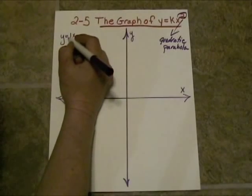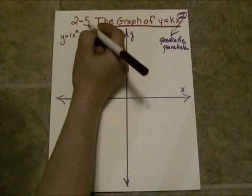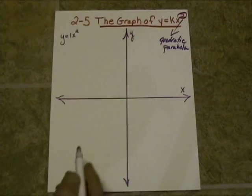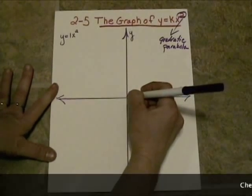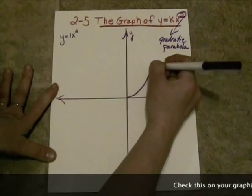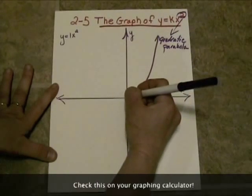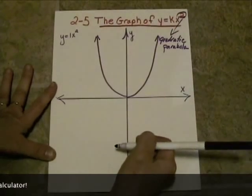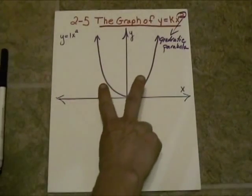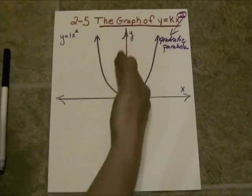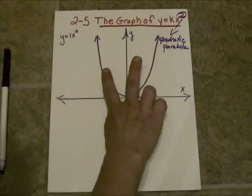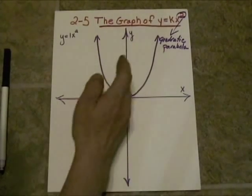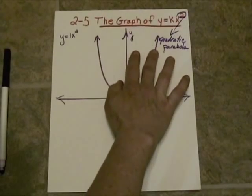We'll have y equals 1x squared, which is another way of saying y equals x squared. That's going to give us a parabola that opens upward, going into the first quadrant and into the second quadrant. Even though drawn freehand, you can see that the y-axis is an axis of symmetry — what you have on one side is the same as what you have on the other.